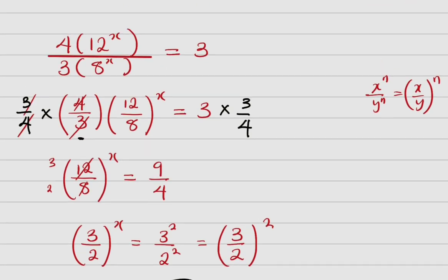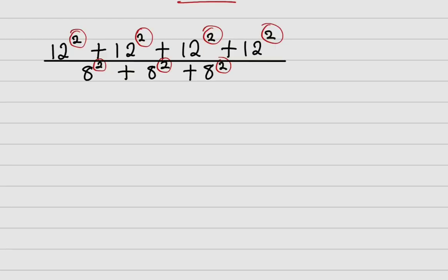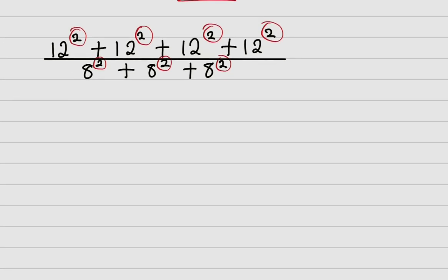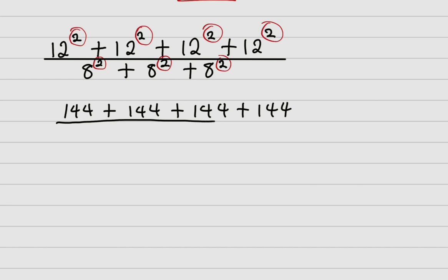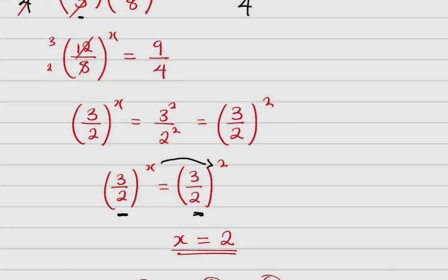Now let's verify by substituting x equals 2 back into the original question. Replacing x with 2: the numerator becomes 12 squared four times, which is 144 + 144 + 144 + 144 = 576. The denominator is 8 squared three times: 64 + 64 + 64 = 192. Dividing 576 by 192 gives 3, which proves our answer is correct.